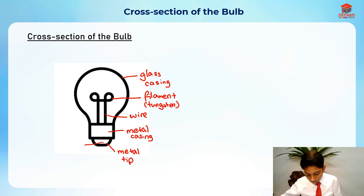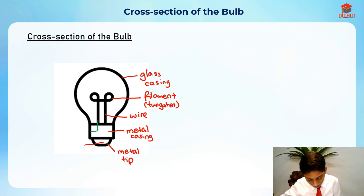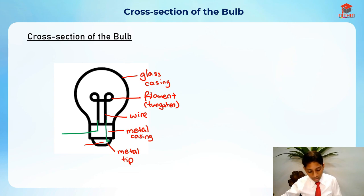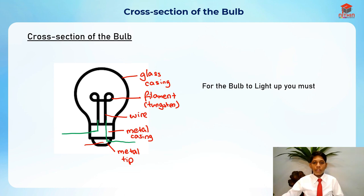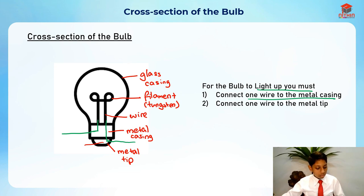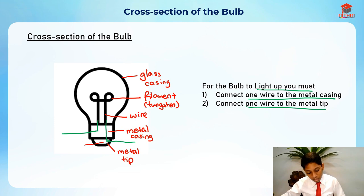The wires connect to the metal casing and the metal tip. For the light bulb to light up, you must connect one wire to the metal casing and one wire to the metal tip. When electricity flows through, it goes through the filament and goes around again — it's basically a cycle.